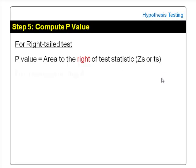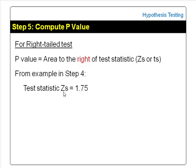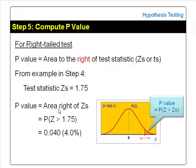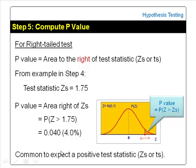For example, in step 4 the test statistic zs was found to be 1.75. The p-value for this right-tailed test will be the area to the right of zs, which is 1.75. This is also the probability of z greater than 1.75. The table shows that the probability, or the area to the right of z greater than 1.75, is 0.04 or 4%. It is common to expect a positive test statistic in a right-tailed test, because we suspect that the sample mean is greater than the hypothesized mean.